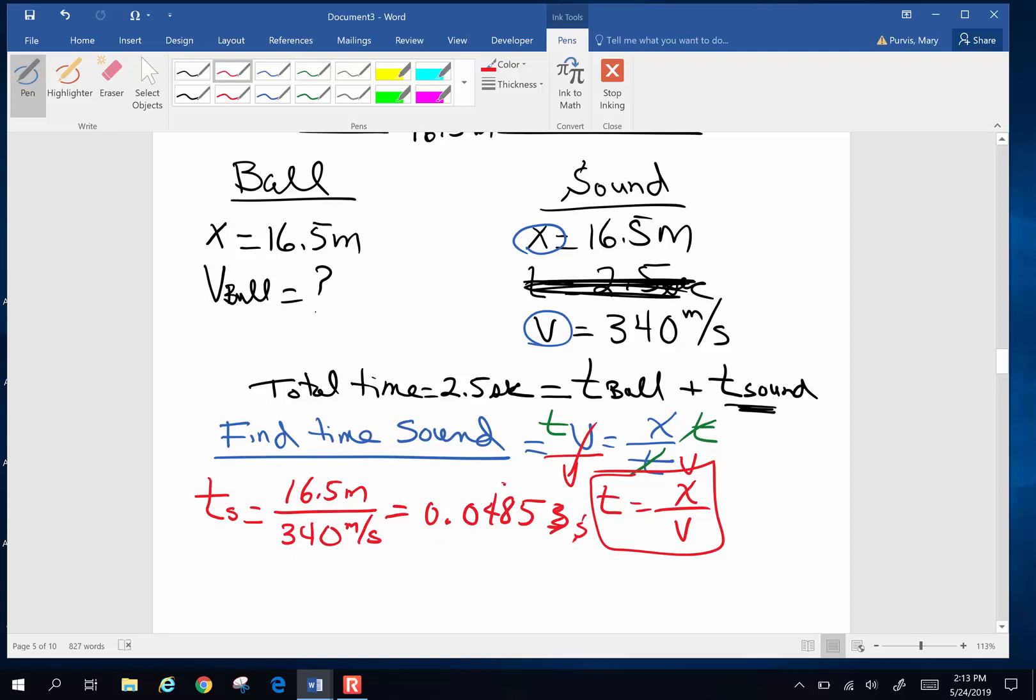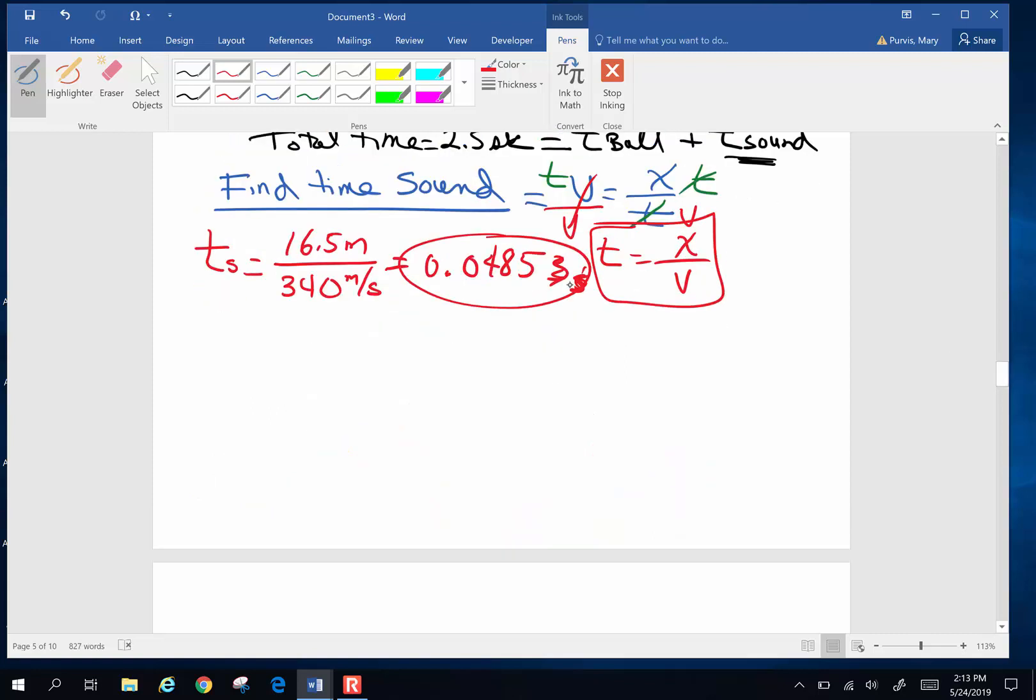It should be seconds. I said sound, didn't I? I'm getting silly. Where does that second unit come from? Well, it comes from here. I've got meters divided by meters per second. Invert and multiply. Seconds over meters. Meters cancel, and I've got seconds. So this ends up being seconds. That's the time for the sound to travel.